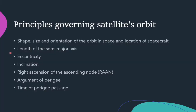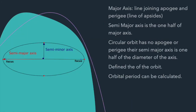They are: the length of semi-major axis, eccentricity, inclination, right ascension of the ascending node (also called RAAN), argument of perigee, and the last one is time of perigee passage. We know that the path followed by each planet is an ellipse with the sun at one of the foci. The point on the orbit closest to the Earth is called perigee and the farthest point is called apogee. The straight line drawn from the perigee to apogee is called the line of apsides. The major axis is the line joining apogee and perigee, and the semi-major axis is one half of the major axis.